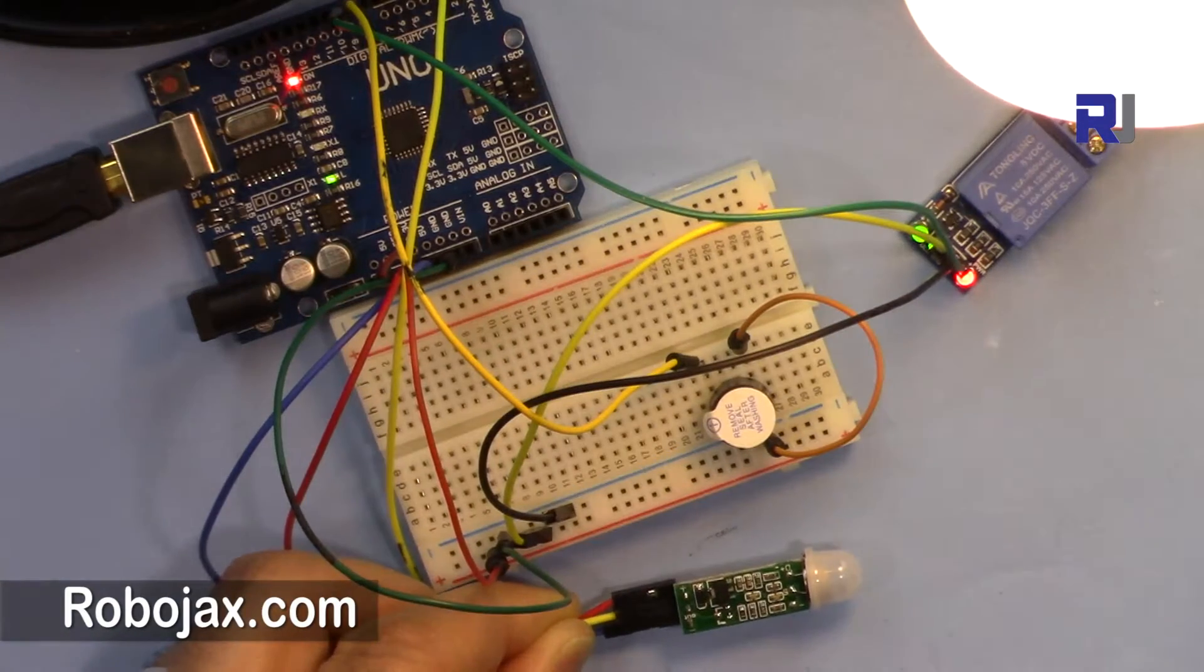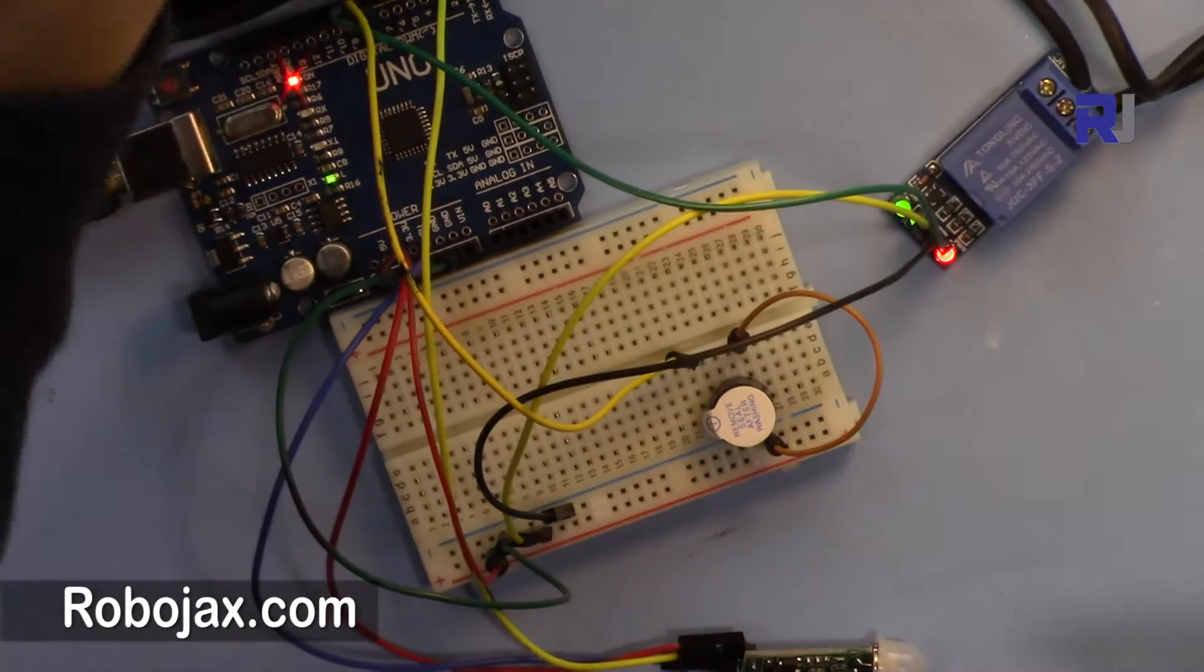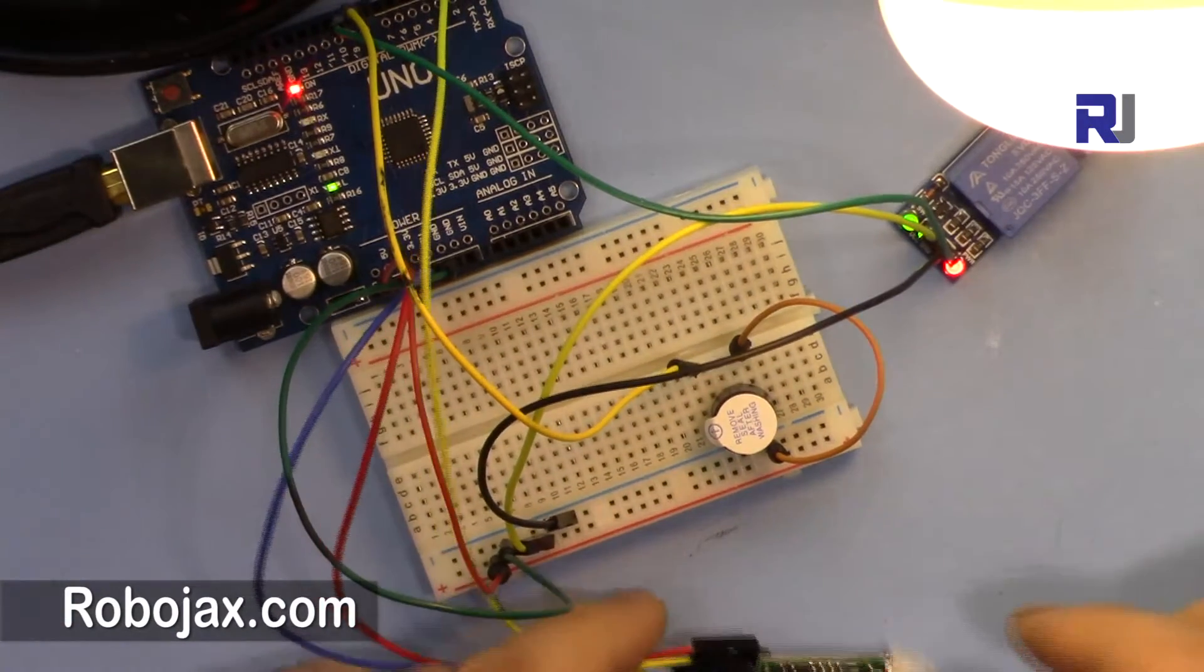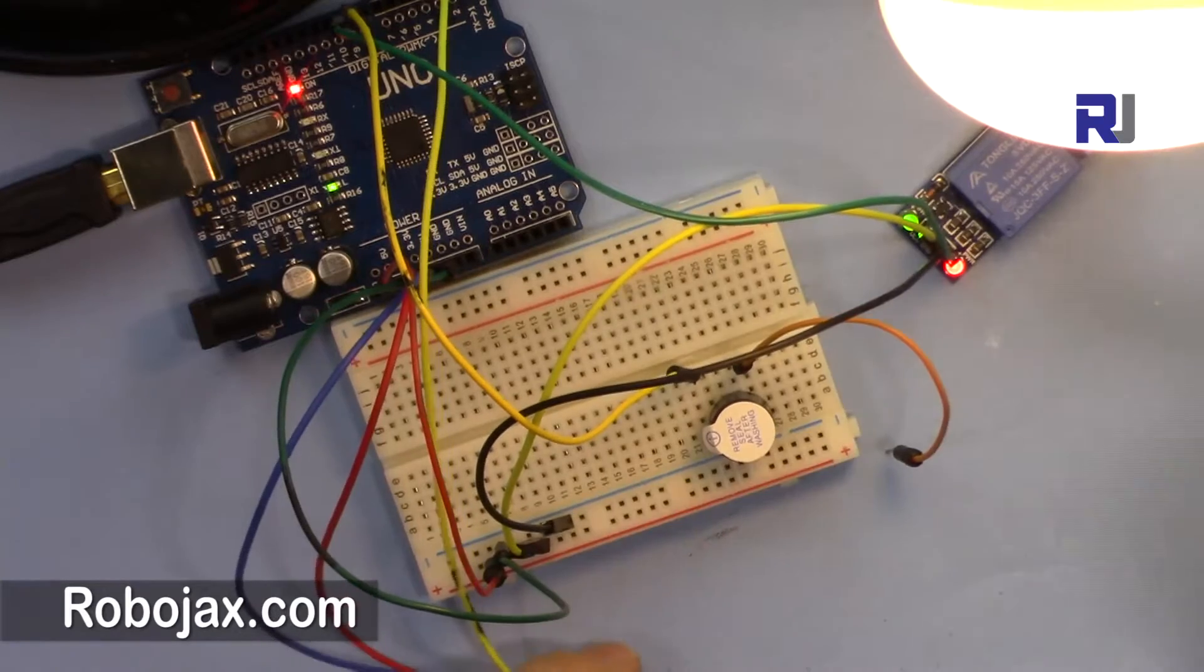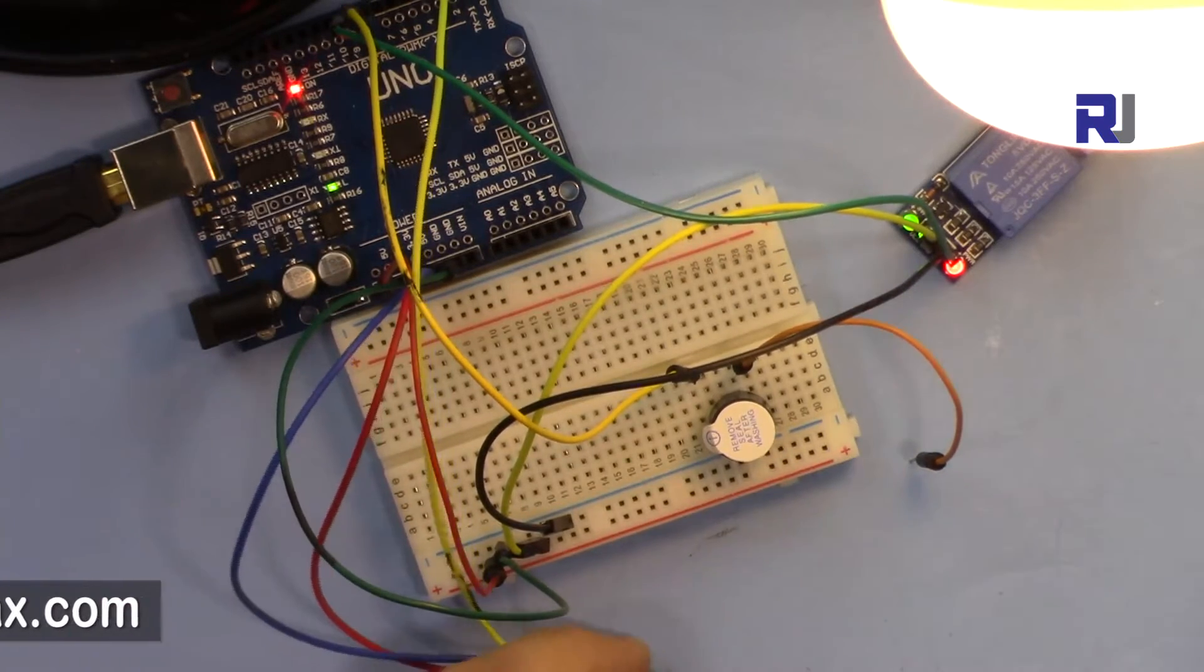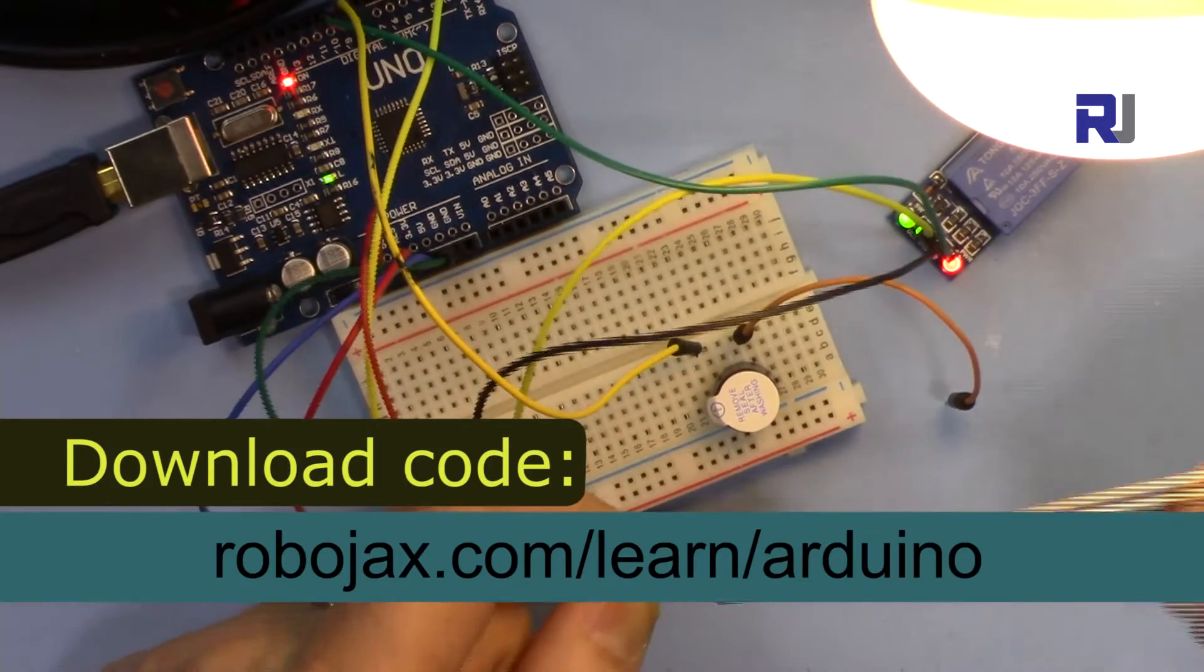If I move my hand here, as you can see the AC bulb is turned on. So this can be done for so many ways and other things. You can turn a camera on or open the door when a motion is detected there.